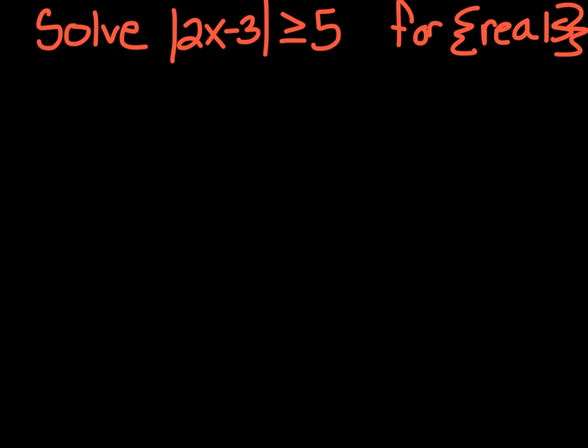Our first example: we're going to solve the absolute value of 2x minus 3 is greater than or equal to 5 for all real numbers. Step one says to isolate the absolute value — it's already isolated. Step two says to split it into two inequalities, so let's do that.